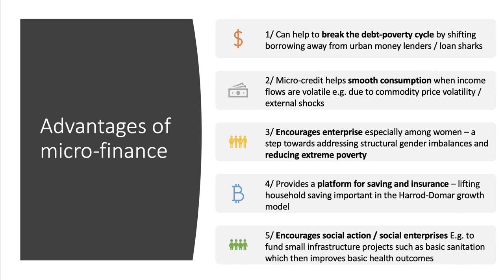Let me pick out five advantages of microfinance that could be useful in an exam answer. The first is that microfinance in theory can help break the debt-poverty cycle — it provides an alternative source of finance away from very high interest rate urban money lenders or loan shops. The second potential advantage is that microcredit can help smooth consumption of goods and services, particularly in countries where income flows from month to month are volatile, such as those heavily dependent on farming where commodity prices are volatile or where an external shock could affect production.